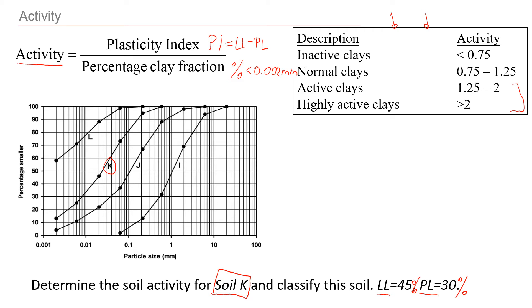Let's look at this soil K. And then we're going to estimate activity. I'm going to write it here, activity of soil K. We'll start with the plasticity index. It's liquid limit 45 minus 30, right? That will give us 15. That's the plasticity index.